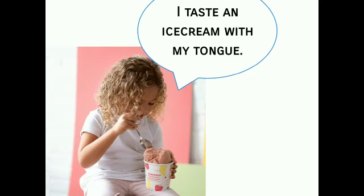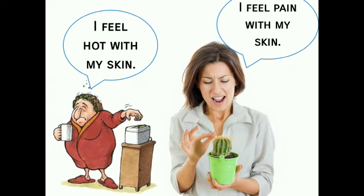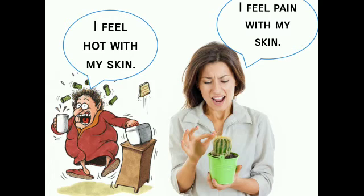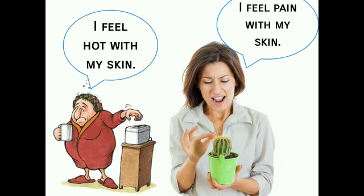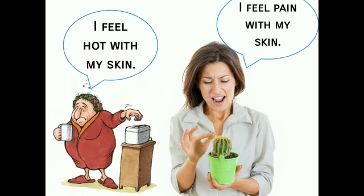Tongue — we use our tongue to taste. Example: I taste an ice cream with my tongue. Skin — we use our skin to touch. Example: I feel hot with my skin, and I feel pain with my skin.